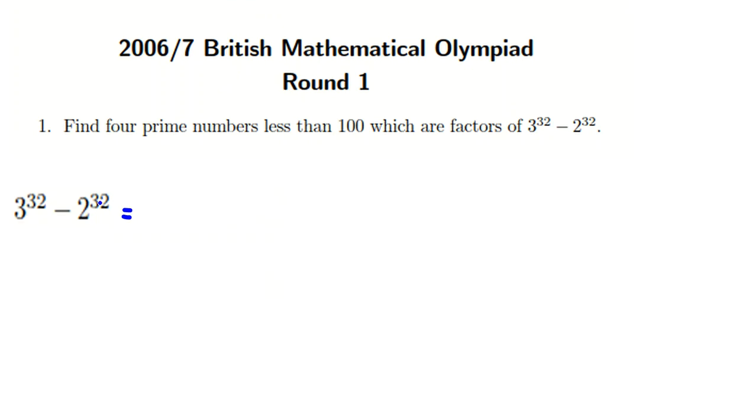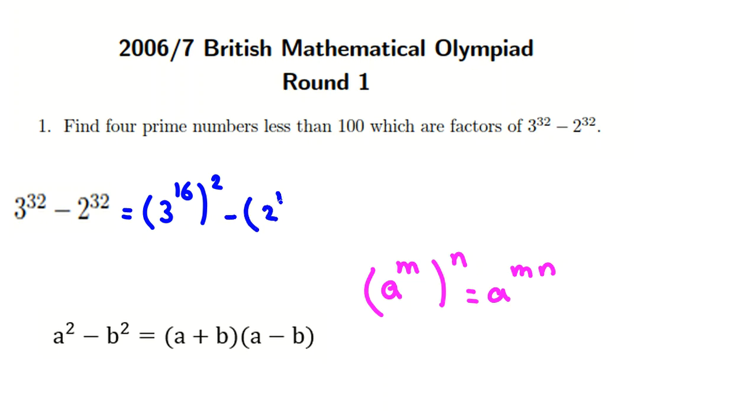We want to factorize this number, and we use this famous identity. We say both of them are perfectly squared. Why? Because it is 3 to the 16 squared. We use this power rule, a to the m to the n equal to a to the m n. So 3 to the 32 equal to 3 to the 16 to the 2 minus 2 to the 16 squared. And now we use this identity.